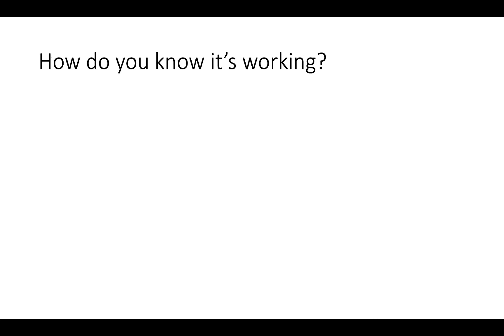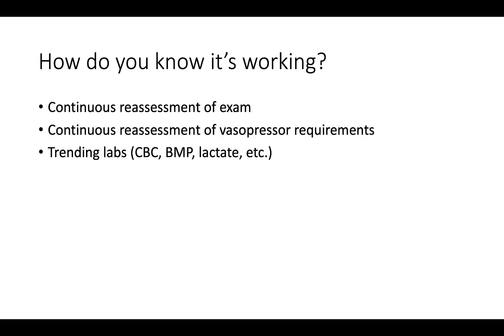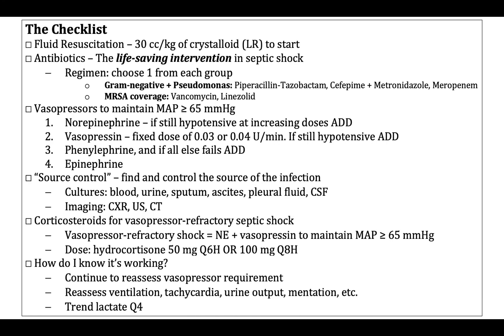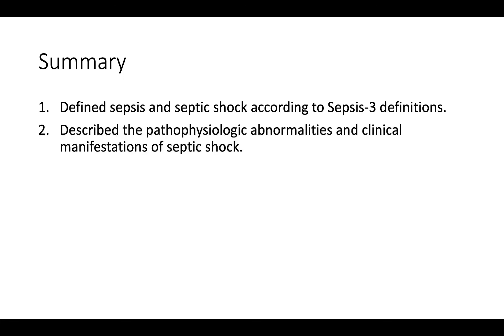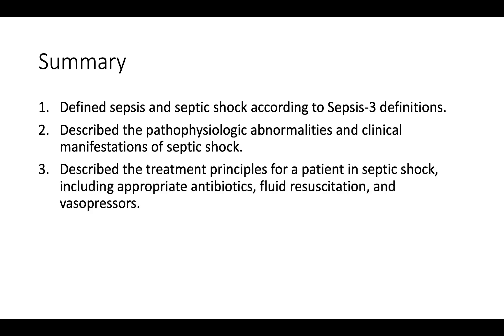We've discussed the importance of early antibiotics, IV fluid resuscitation, vasopressors, corticosteroids, and source control. You know these interventions are working by continuously assessing the patient's exam — including mentation, perfusion status, and urine output — their vasopressor requirements, and by trending labs every four to six hours. On this page is a checklist highlighting the high-yield management principles discussed. In summary, in this session we defined sepsis and septic shock according to Sepsis 3 definitions, described the pathophysiologic abnormalities and clinical manifestations of septic shock, and described the treatment principles including early broad-spectrum antibiotics, fluid resuscitation with lactated Ringer's, and vasopressors.